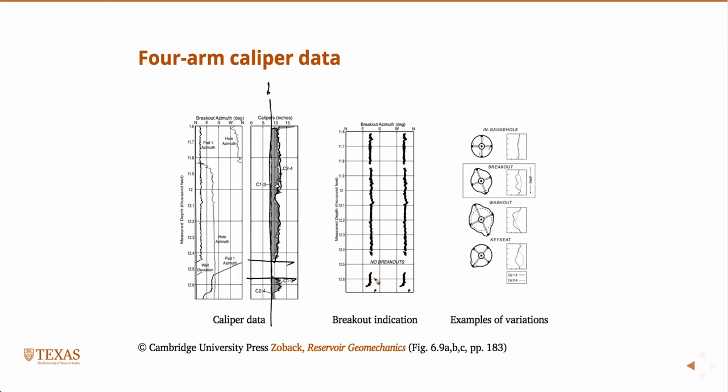If you look at what's been interpreted from these four-arm caliper readings, you see these breakout azimuths and clearly no breakouts in this region. The last point: it takes careful interpretation of the results to know that you're really seeing a breakout. When we talk about breakouts, they're always a clear indication of loss of material and they always occur on both sides of the wellbore at 180 degrees from each other.